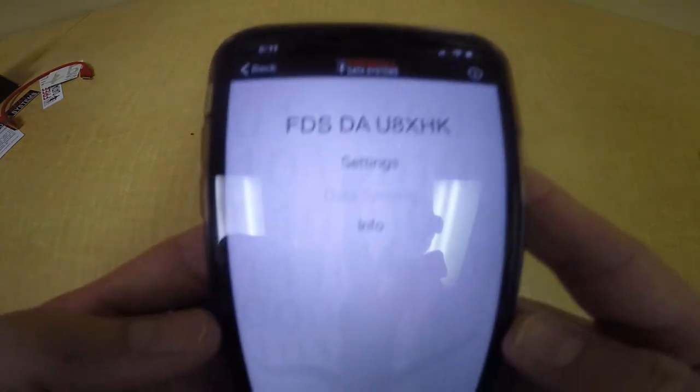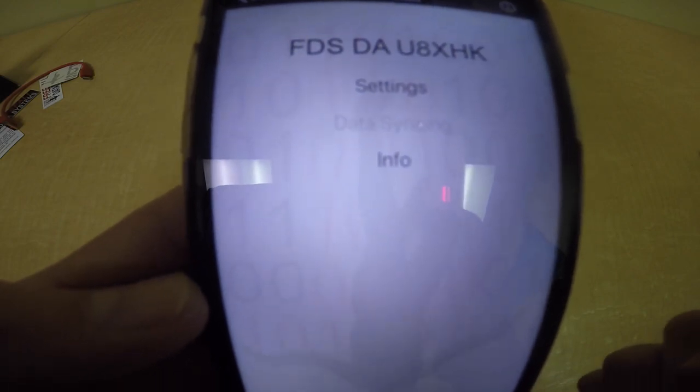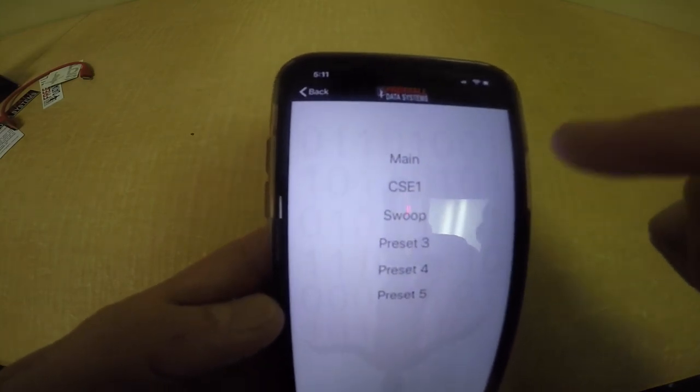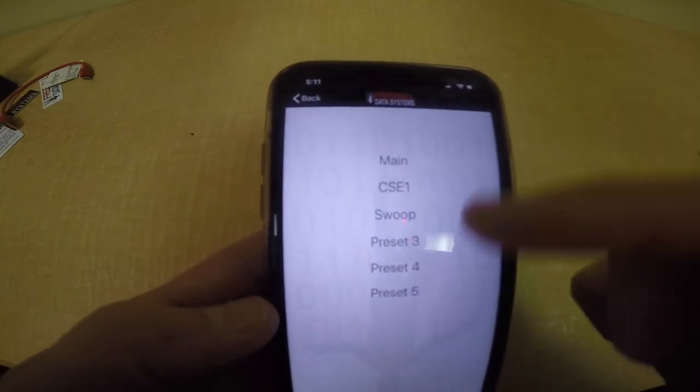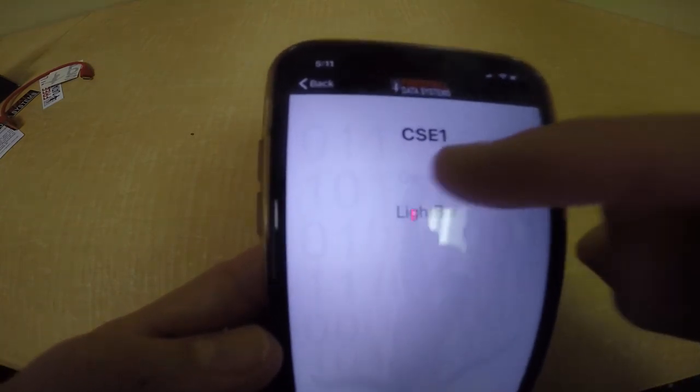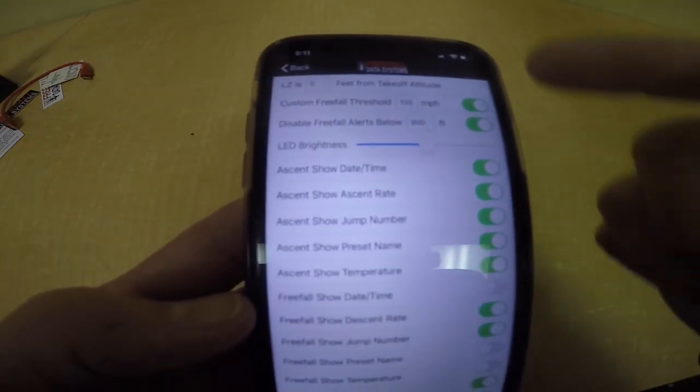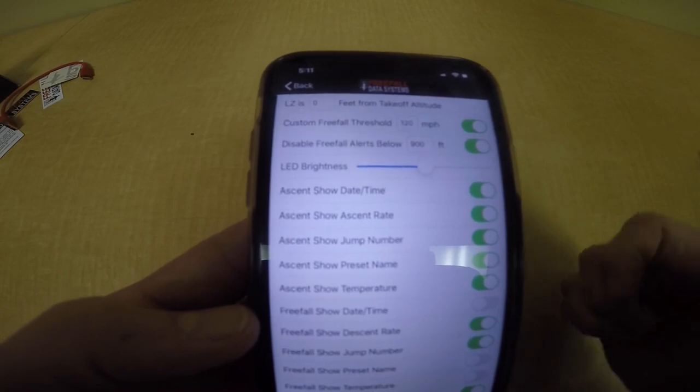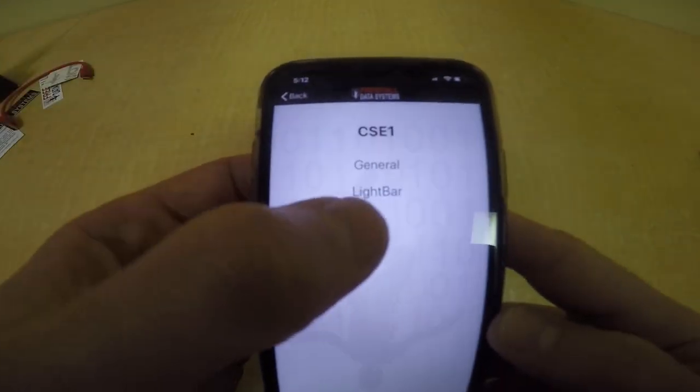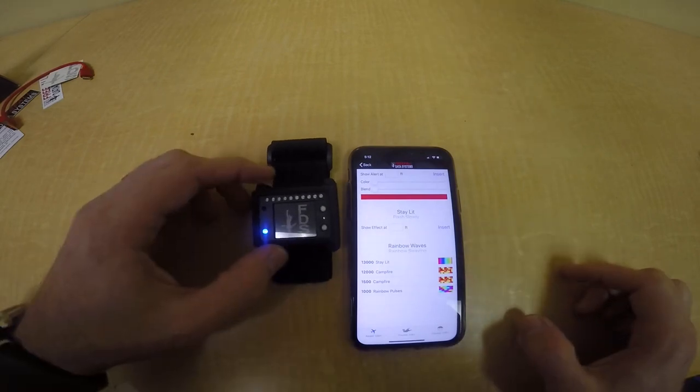And then you get that first menu with settings and info. When you do the settings, it will give you all your presets. I already set one up. So basically click on that and then the general will display the whole menu. What do you want the unit to show you and from what altitude you wanted to activate the light bar and whatnot. And then if you click on the light bar itself, then you can start configuring the alerts.